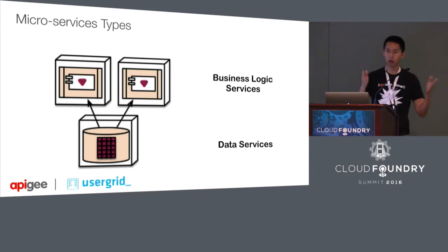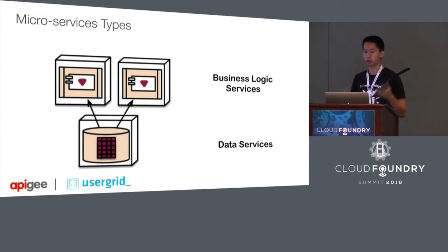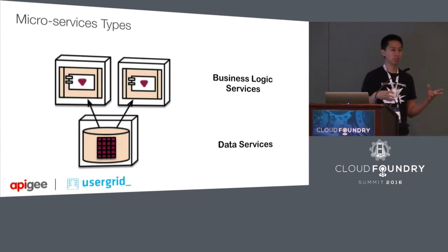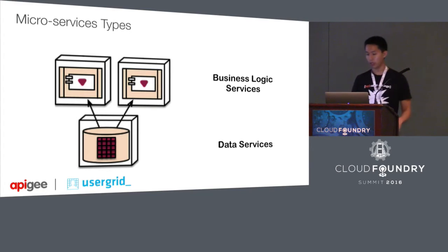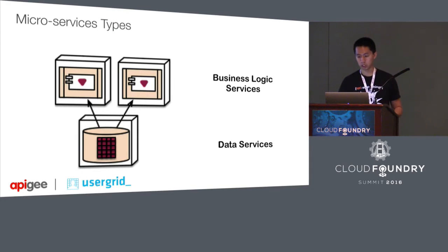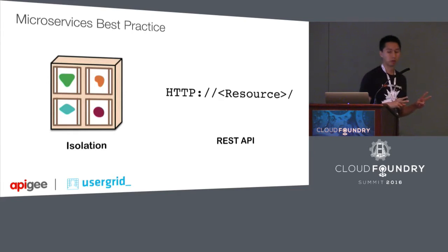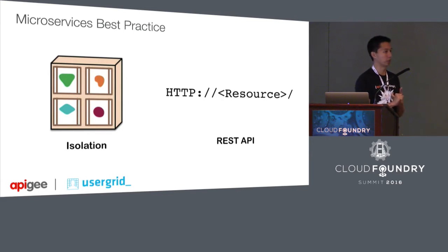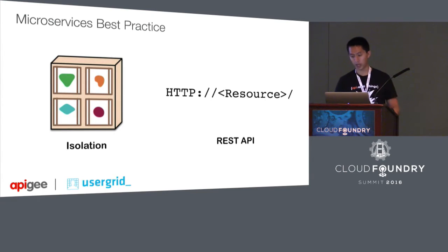Business logic services — we hear a lot about these when creating new apps. These are supposedly stateless services. But what about services that need persistence? How can we do that a little better? Regardless of whether it's a business logic service or a data service, two things need to happen for microservices: they need to be isolated from each other, and they need to have an API. You don't want any database connections or direct socket connections — they all should have an API.